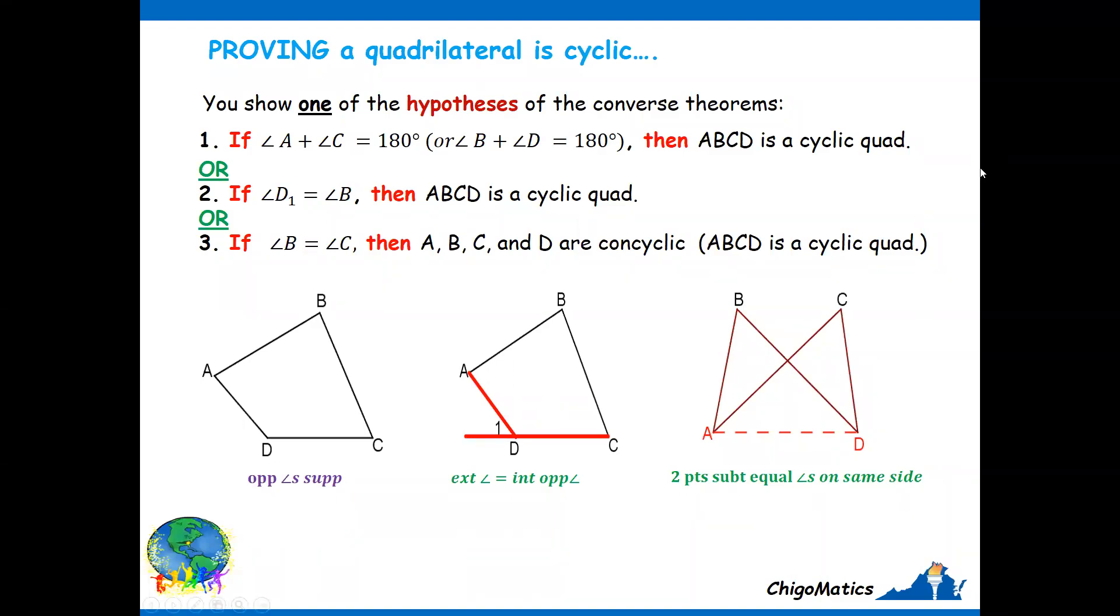When you want to prove that a quadrilateral is cyclic, remember that you are supposed to show any one of the converse theorems so that they are presented in the diagram in the following manner. This is for number one, this is for number two, and this is number three. I'm going to concentrate with number one where I'm going to give you the tips on what it is that you are supposed to do.